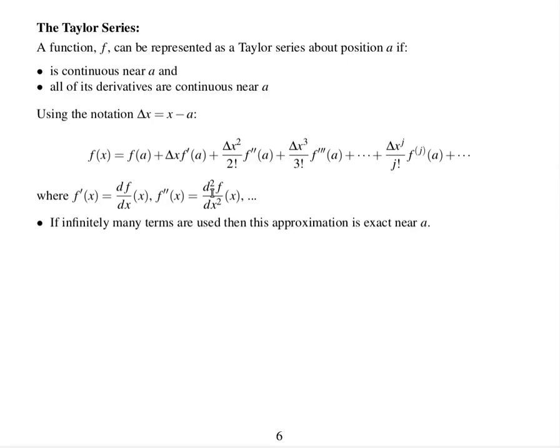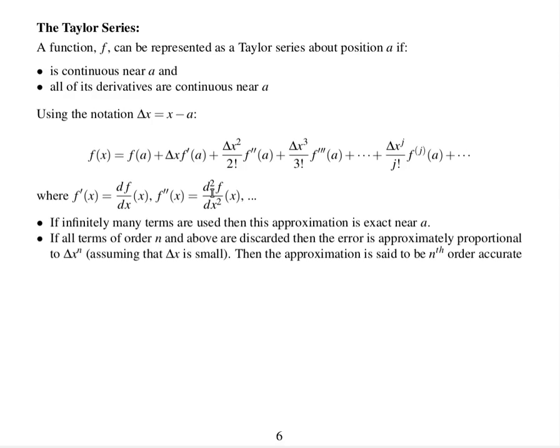So if infinitely many terms are used, then this approximation is exact near a. If all terms of order n and above are discarded, then the error is approximately proportional to delta x to the power n, if delta x is small. Then the approximation is nth order accurate.